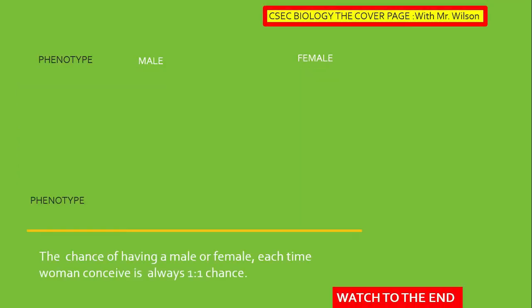Here we are going to be using the genetic cross. The phenotype is on screen — male, female. Now we have the genotype. Usually the naming convention places X in front of Y for the male and XX for the female. Let's break away to the gametes, as you should do in your exams.